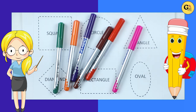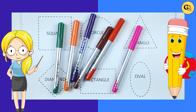Hello friends, today we learn shapes. Which shape is this? Square, circle, triangle, diamond, rectangle, oval.